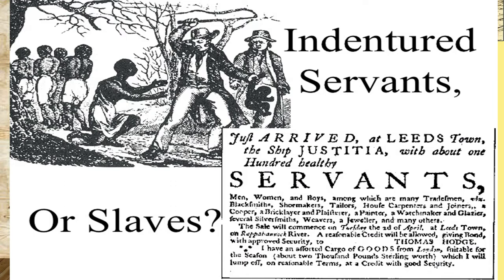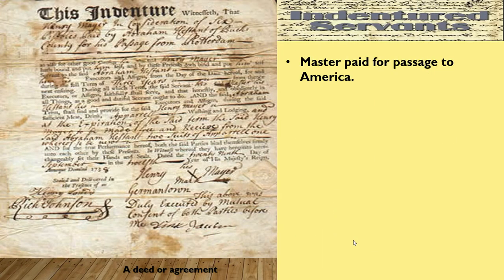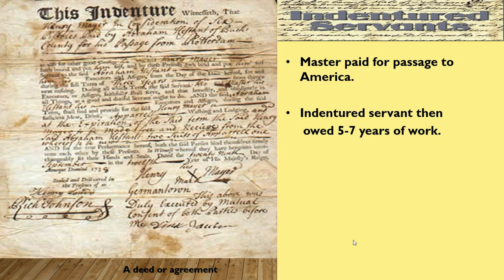Indentured servants — or were they slaves? So an indentured servant was taken out to the different plantations. They had indentured servants in the beginning. The master paid for passage to America. The indentured servant then had to work five to seven years. This is what an indentured servant is — a deed or an agreement. This is what it would look like, and remember, everything was written by hand. The signatures, all of those were done by hand. They were not computerized.